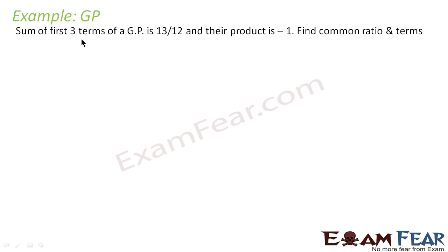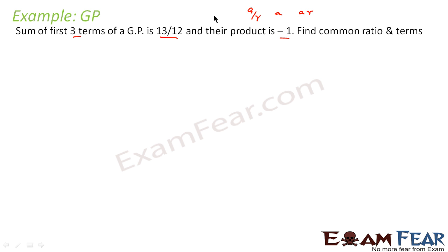We are told that the sum of the first three terms of a GP is 13/12 and their product is minus 1. We have to find the common ratio. To take three terms in a GP, we take a/r, a, and ar. We see the ratio of terms is r, and if you multiply all terms, r will get cancelled, so it's always good to take terms in the form a/r, a, and ar.